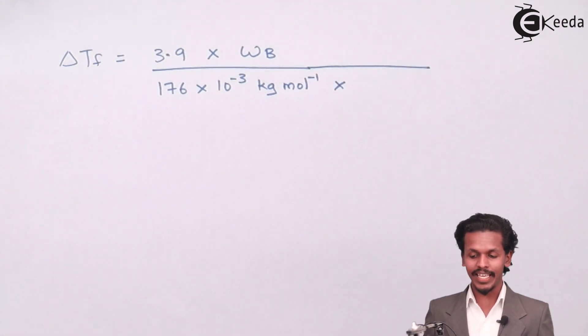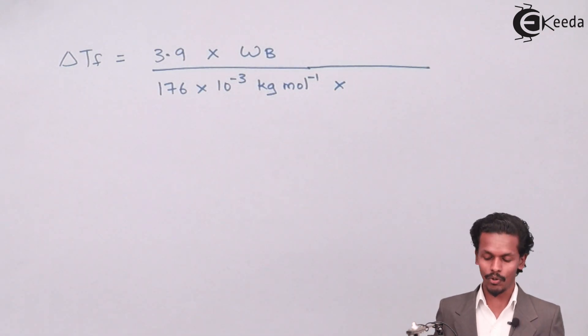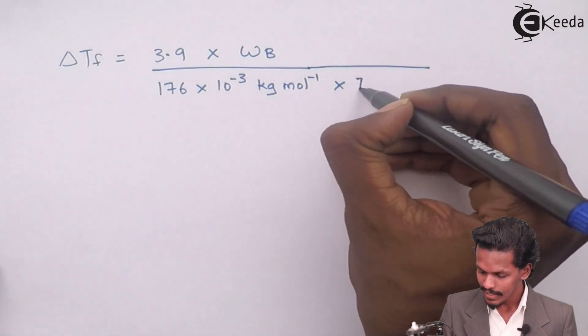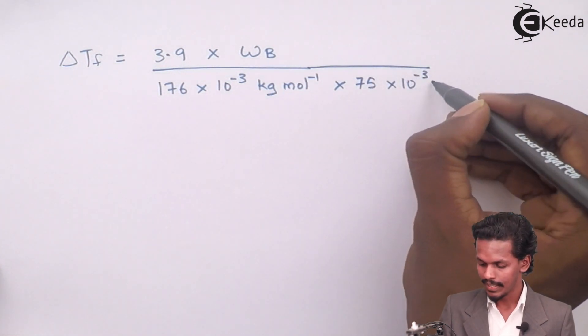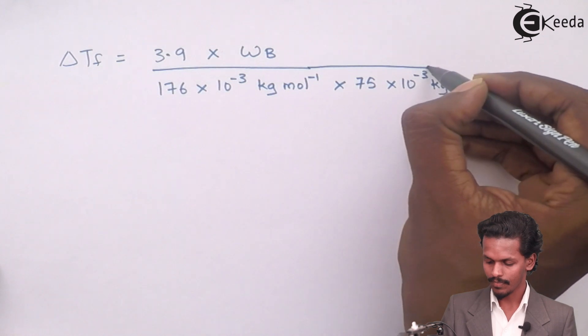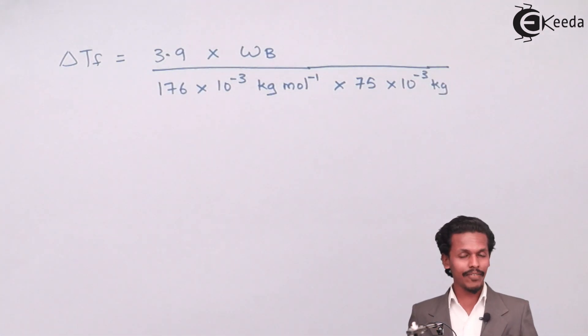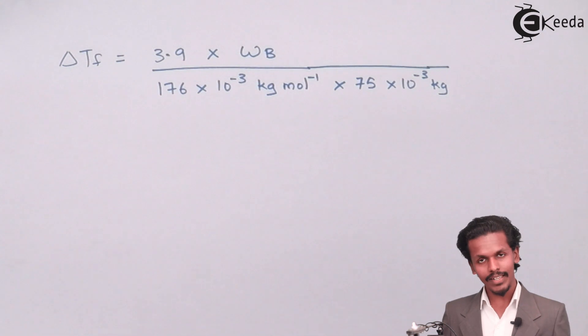Into WA in kg. The WA value is present in gram but should be converted into kg, therefore 75 into 10 raised to minus 3 kg. Delta TF is also given to us in the format of Kelvin.